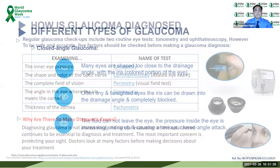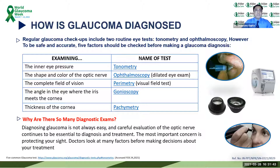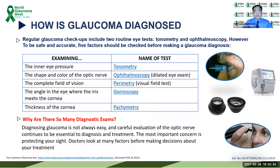How is glaucoma diagnosed? The importance of regular glaucoma checkups cannot be overemphasized. There are five cornerstones of diagnosing glaucoma: tonometry — recording the pressure of the eye; ophthalmoscopy — assessment of the optic nerve after dilation of the eye; perimetry or visual field test — assessment of the field of vision and damage caused; gonioscopy — examining whether the angle is closed or open; and pachymetry — measuring the thickness of the cornea, which must be factored in when recording intraocular pressure.